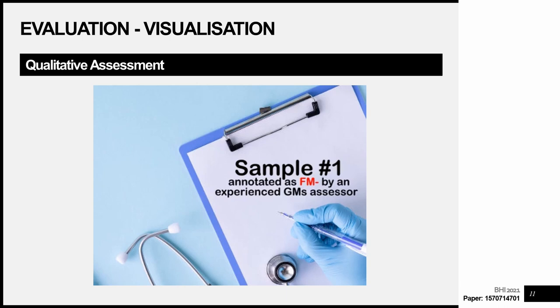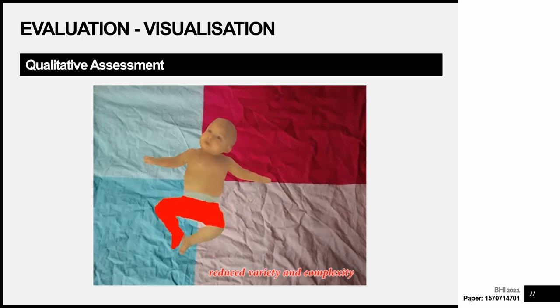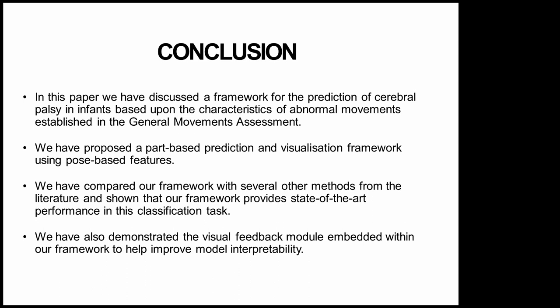In this final slide we show an example of the visualizations generated by our framework. In this example we can see a video labelled as abnormal, and from the visualization the highlighted body parts are generally showing less complex or more repetitive movements, aligning well with the criteria set out in the General Movements Assessment. To conclude, we have discussed a framework for the prediction of cerebral palsy in infants based on the characteristics of abnormal movements established in the General Movements Assessment, proposed a part-based prediction and visualization framework using pose-based features, shown state-of-the-art performance, and demonstrated the visual feedback module to help improve model interpretability. Thank you for your time.